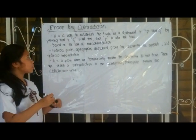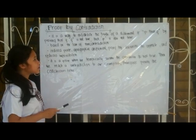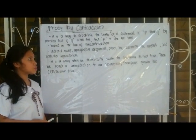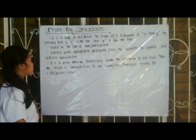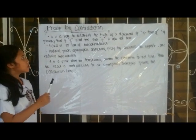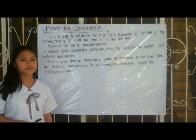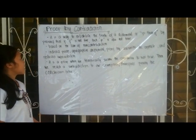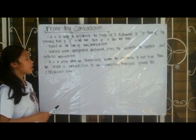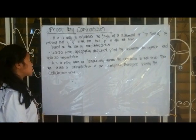This is called proof by contradiction. Proof by contradiction is a way to establish the truth of a statement — if P then Q — by proving that if Q is not true, then P is also not true. It is based on the law of non-contradiction, which states that a mathematical statement cannot be both true and false. It is also called indirect proof, apagogical argument, proof by assuming the opposite, and reductio ad absurdum.